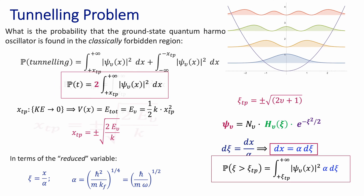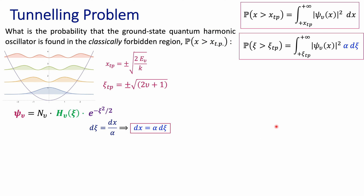Let's explore the solution for the ground state, where the principal vibrational quantum number equals zero. The first thing we have to do is calculate the turning point in terms of the reduced coordinate. Using the formula for the turning point — square root of 2 times the quantum number plus one — with v=0 that gives plus or minus one. Those are the two turning points. I'll calculate for one of them and then multiply by two to find the total probability, accounting for tunneling to both the right and left of the graph.